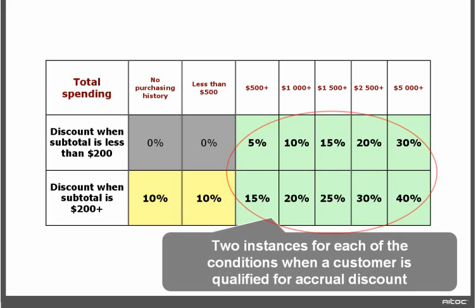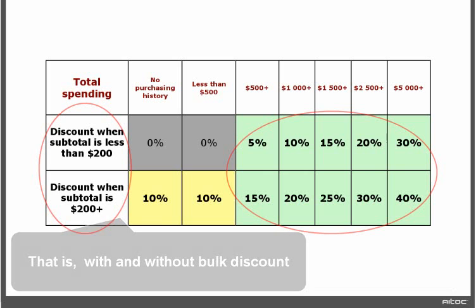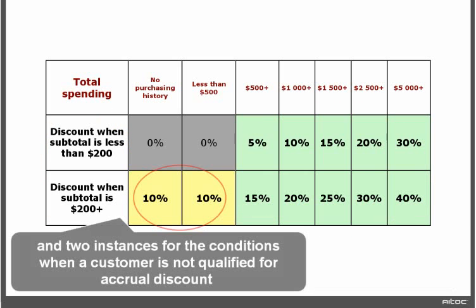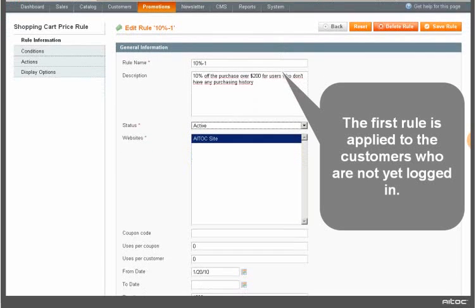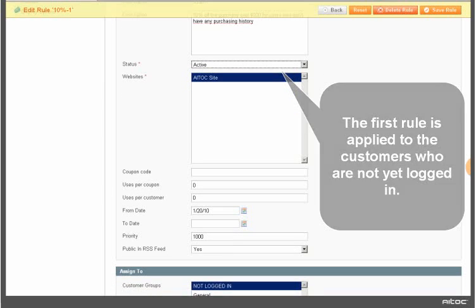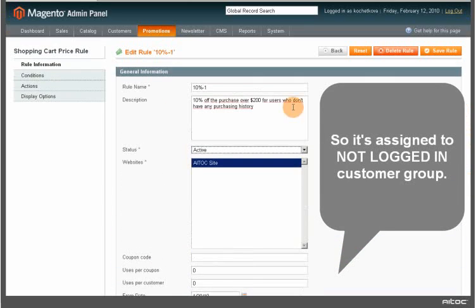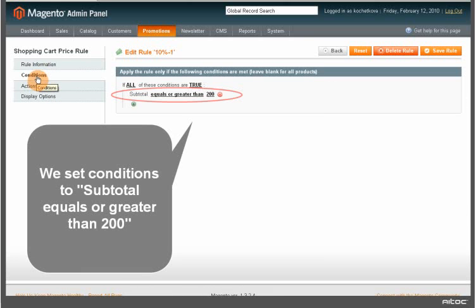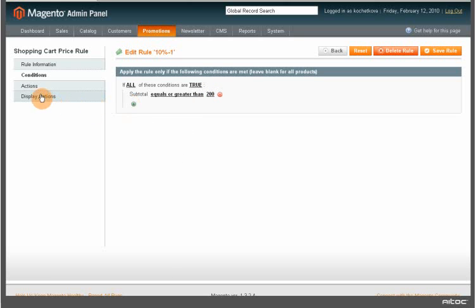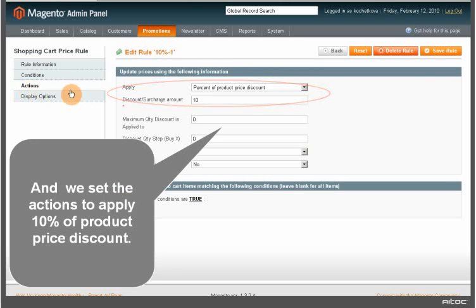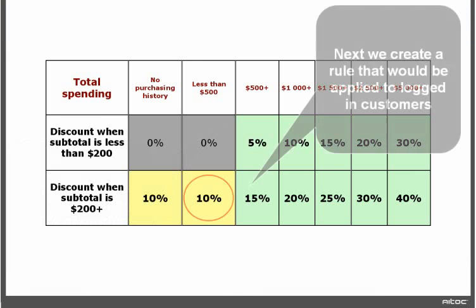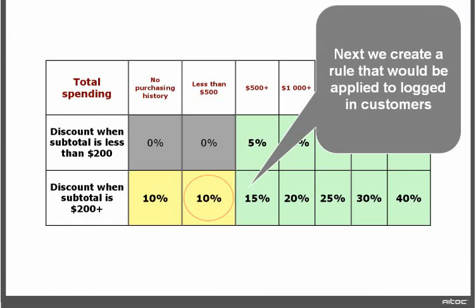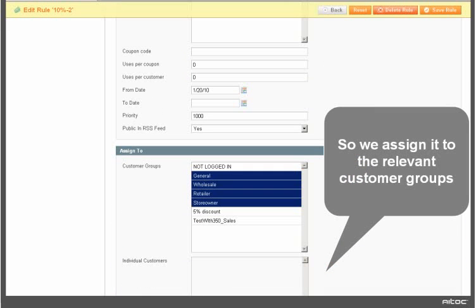Two instances for each of the conditions when a customer is qualified for accrual discount — that is, with and without bulk discount — and two instances for the conditions when a customer is not qualified for accrual discount. So the first rule is applied to customers who are not yet logged in, so we assign it to the not-logged-in customer group. We set conditions to subtotal equals or greater than $200, and we set the actions to apply a 10% product price discount.